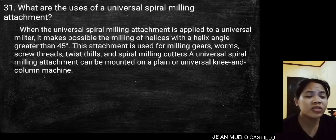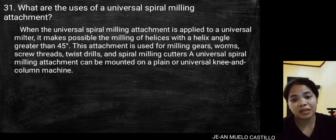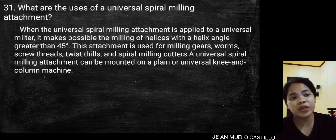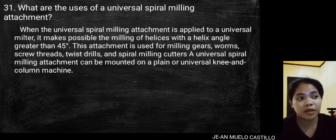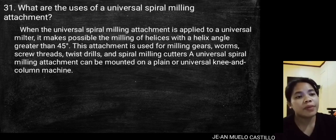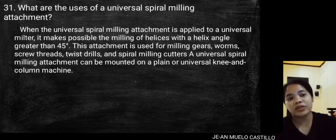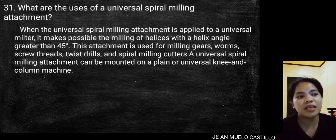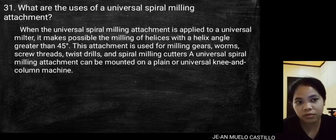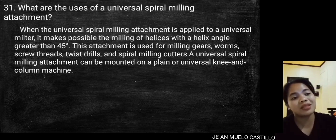What are the uses of a universal spiral milling attachment? When the universal spiral milling attachment is applied to a universal miller, it makes possible the milling of helices with a helix angle greater than 45 degrees. This attachment is used for milling gears, worms, screw threads, twist drills, and spiral milling cutters.